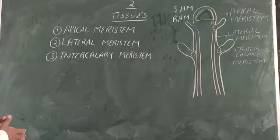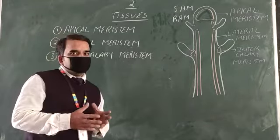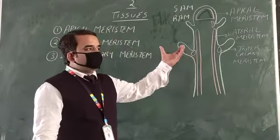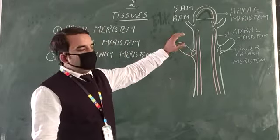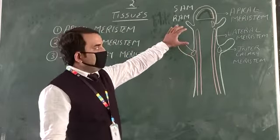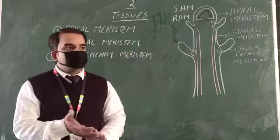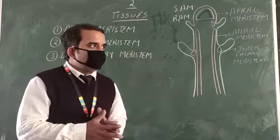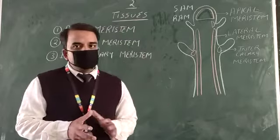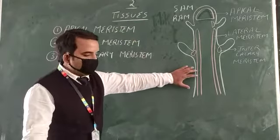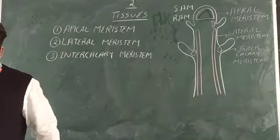Vascular tissue includes xylem, which conducts water and nutrients from the soil to the aerial parts of the plant. It also translocates food from the leaves — the photosynthetic portion — to the other parts of the plant. These tissues combine together to make the vascular tissue, which is formed by the lateral meristem.